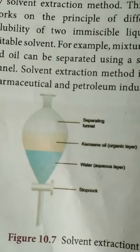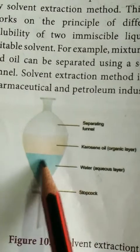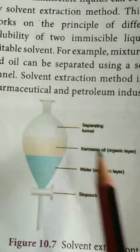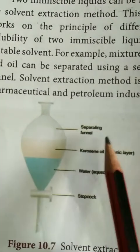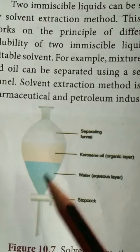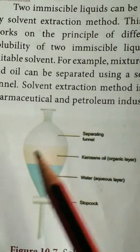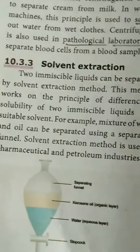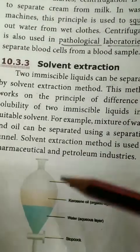In the separating funnel, there is a stopcock at the bottom. Water forms the aqueous layer at the bottom, and oil forms the organic layer on top. The stopcock is used to drain out the lower water layer first, followed by the organic oil layer. In this way, two immiscible liquids are separated using the solvent extraction method.